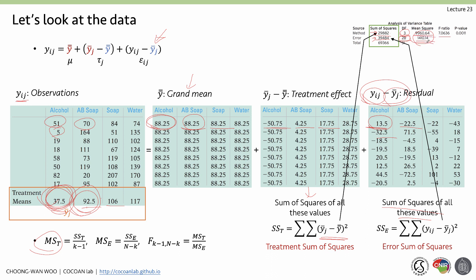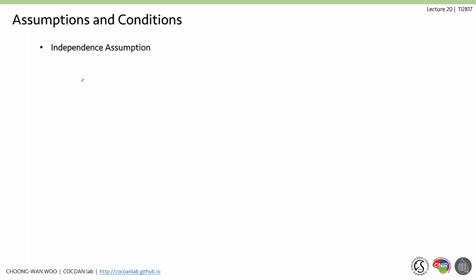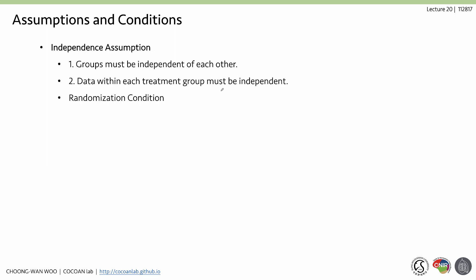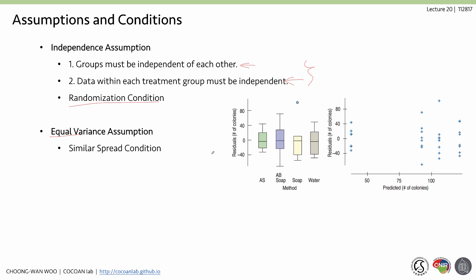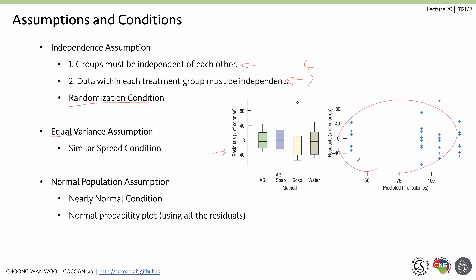We can then test whether the F-ratio is surprising using a p-value. There are assumptions and conditions: the independence assumption requires that groups be independent of each other and data within each treatment group be independent — we handle this with the randomization condition. The equal variance assumption requires each group to have a similar spread, which we check with residual plots. The normal population assumption requires nearly normal distributions across groups, checked with a normal probability plot of all residuals.